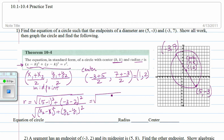So that gives us five minus one is four, four squared is sixteen, negative three minus two is negative five, negative five squared is positive twenty-five, and that is square root of forty-one. So that's our r.